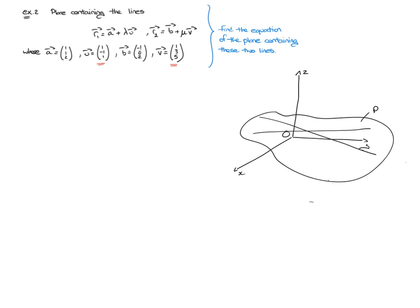Now, let's look at the information we're given here. We know that the first line has a position vector A on it, so this point A is on the first line. I can go ahead and say that point A, which is on line one, has position vector A.